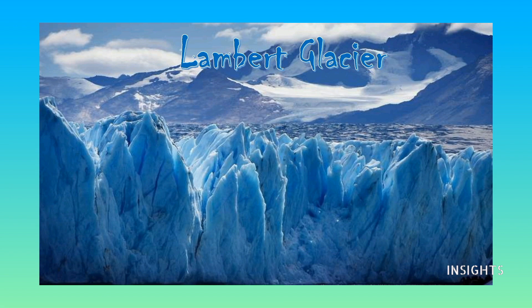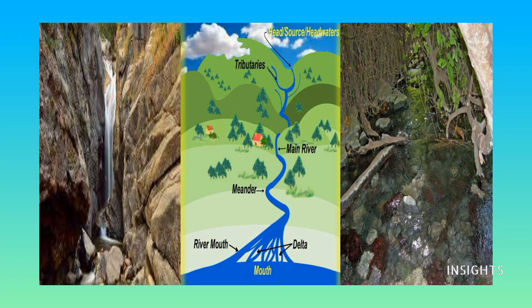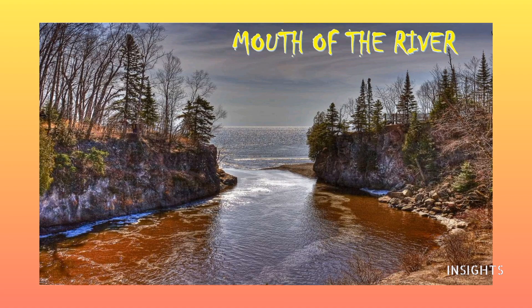Now let us proceed to know more about a landform that begins as a glacier — yes, it's a river. Of course, not all rivers have glaciers as their origin. The starting point is where a river begins its flow — that is its source, called the headwater. The headwater can come from rainfall or snowmelt in the mountains, but it can also bubble up from groundwater or form at the edge of a lake or a large pond. The other end of the river is called the mouth, where it empties into a larger body of water, such as a lake or ocean.